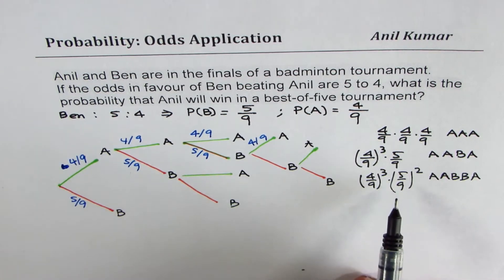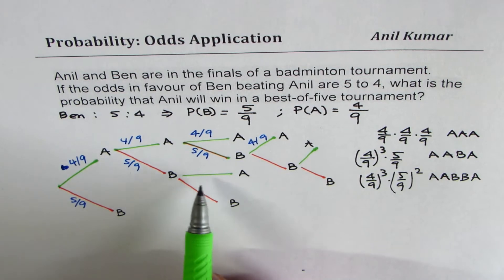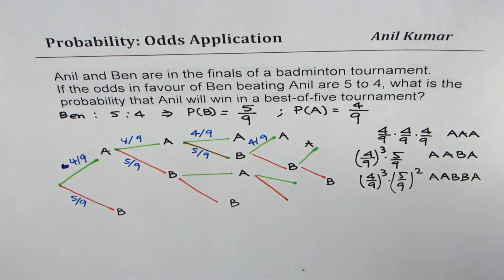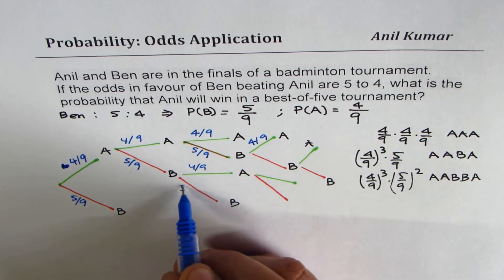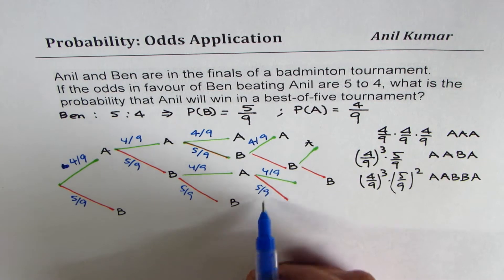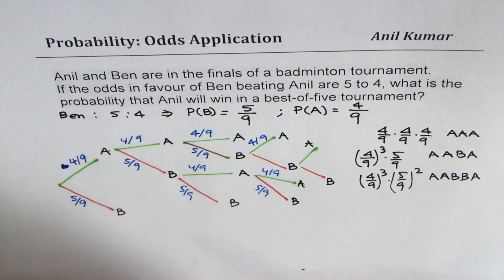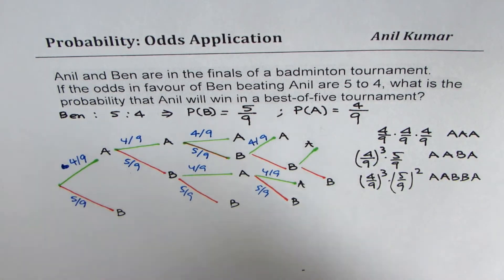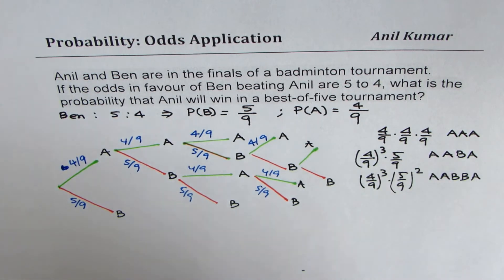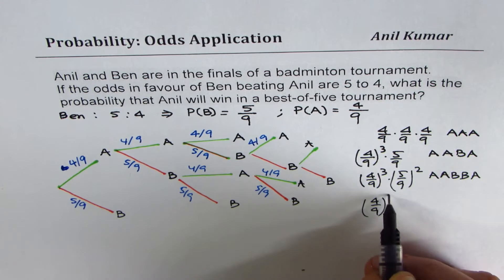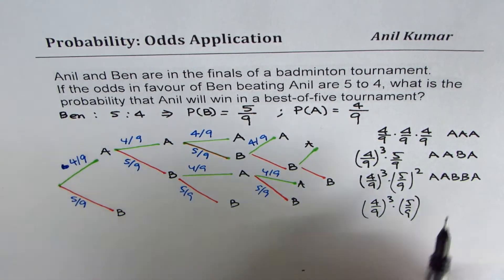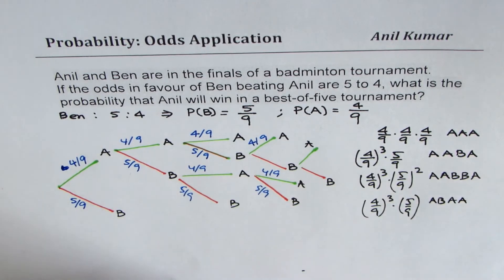You can continue with this and find your result. Now let's look into this path: Anil, Ben, Anil. Again we could have Anil or Ben. Whenever Anil wins, the probability is 4 out of 9, and for Ben it is 5 out of 9. That gives you another victory — 3 Anil wins and 1 Ben. So let me write this as (4/9)³ times (5/9), coming from the sequence A, B, A, A.